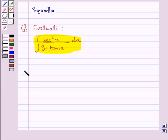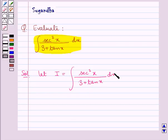Let us proceed with the solution now. We take I equal to the integral of sec²x over (3 + tan x) dx.